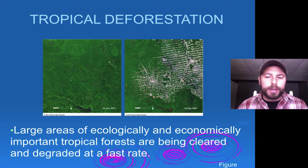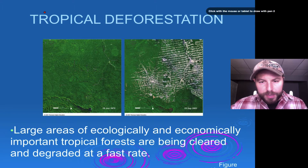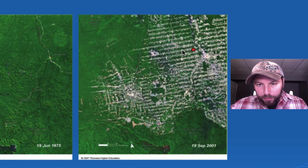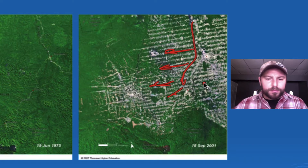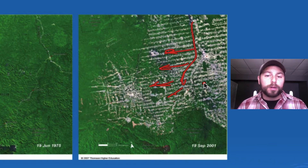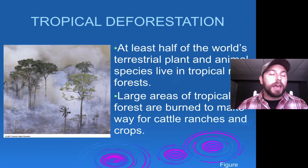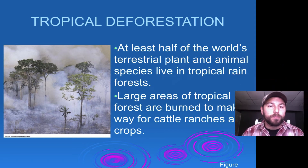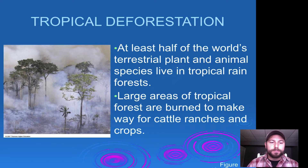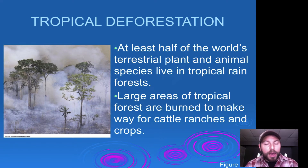We see tropical deforestation like what's appearing here in the Amazon, and we can see a number of different roads — an access road here and how they're branching off to go into different areas to remove timber. We have satellite images showing countries exploiting their tropical rainforests at a pretty fast rate. Large areas of these tropical forests are being burned to make way for cattle ranches and crops such as sugarcane or corn.